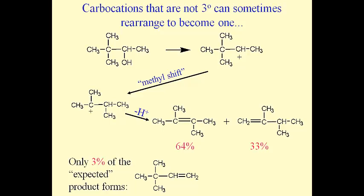One big piece of evidence that such carbocations exist is the fact that they can occasionally rearrange, and if they do so they are going to make themselves more stable.